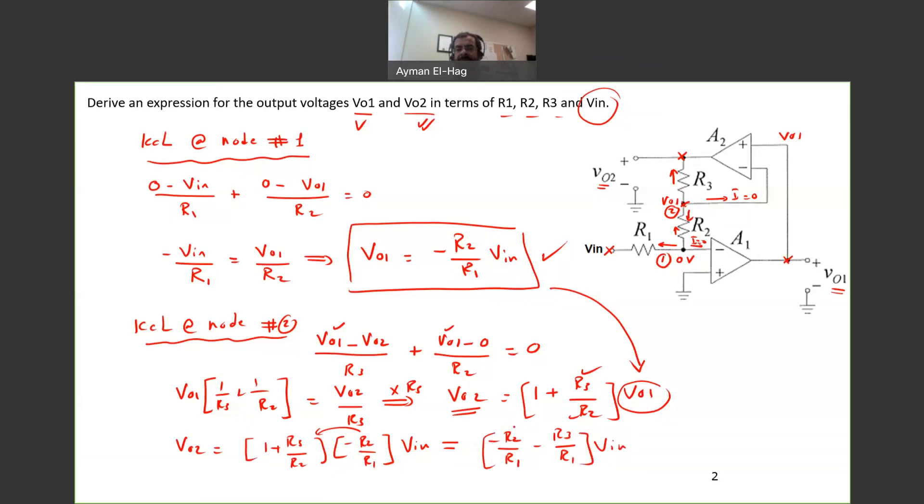So this is how we can find the two output voltages of the op-amp in terms of your variables in the circuit. Thank you very much.